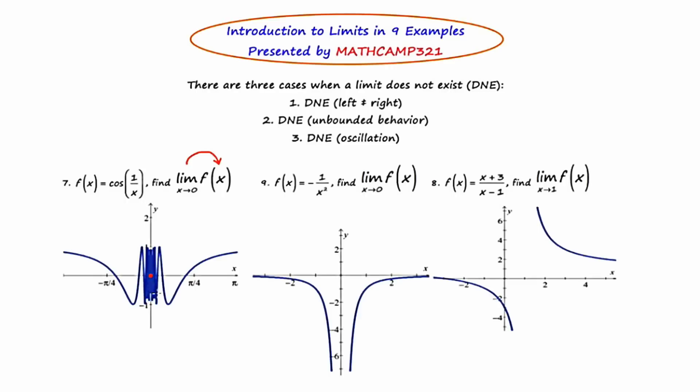And in this case, the left and the right-hand side of zero are not approaching the same value. So if you had to take a guess out of which of the three this would be, what might you pick? Well, if you picked DNE oscillation, you'd be correct.